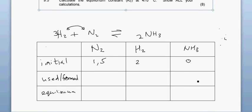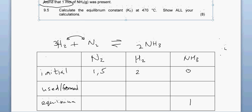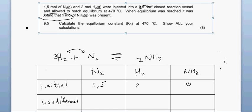At equilibrium, this is very important — one mole of ammonia is present. Let's double-check: 1.5 moles of nitrogen, 2 moles of hydrogen, and initially zero moles of ammonia. At equilibrium, the amount of ammonia is one mole.